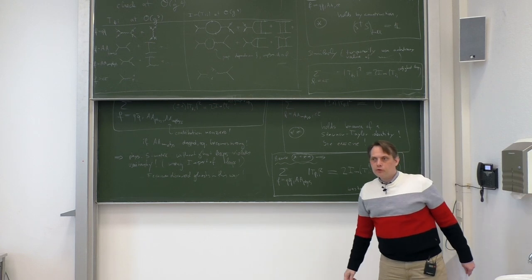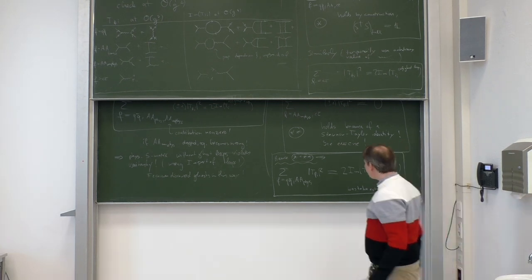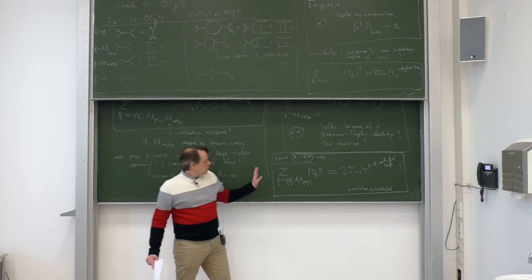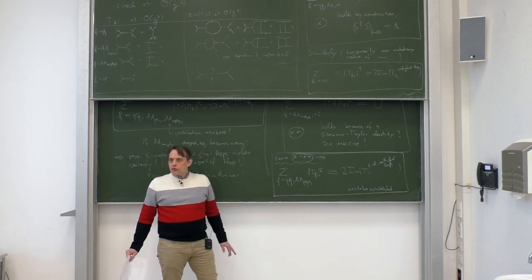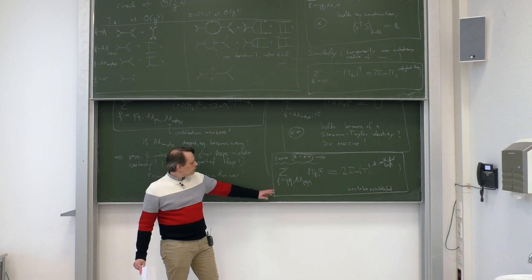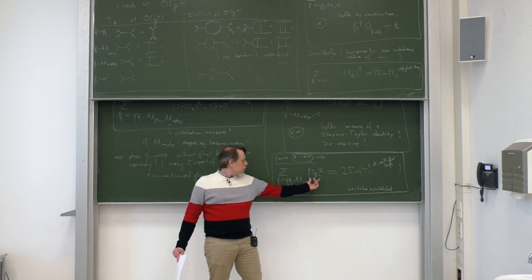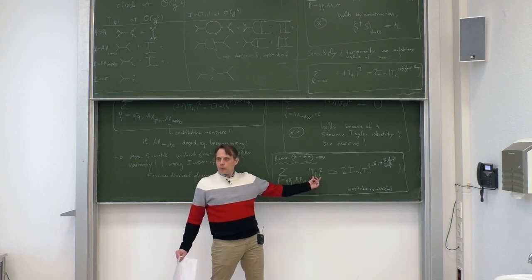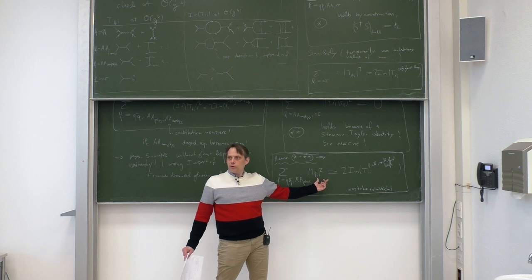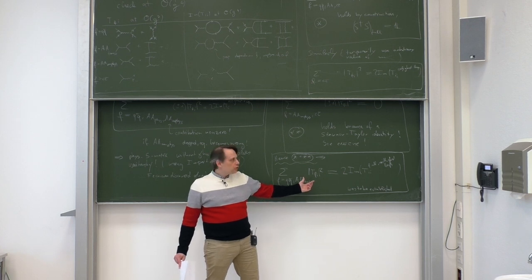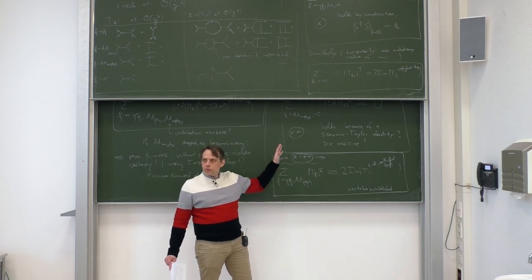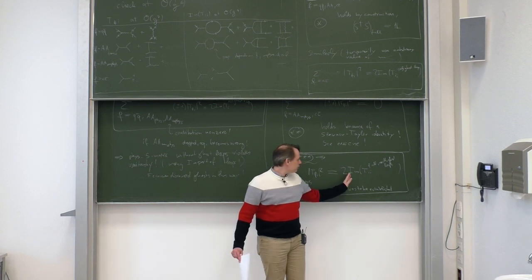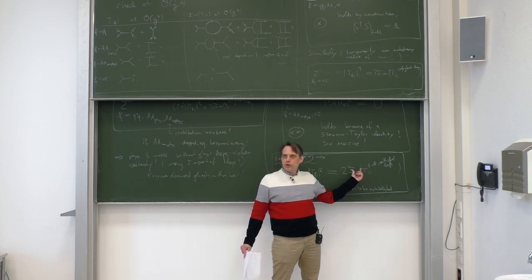Combining (1★) and (2★) we obtain the final statement: the sum over only physical final states F = QQ-bar and physical AA, which always have positive norm, gives: Σ|T_fi|² = 2 Im(T_ii), where T_ii includes the full amplitude with ghost loops. This corresponds to the physical unitarity of the physical S matrix in our BRST formulation of Yang-Mills theory.